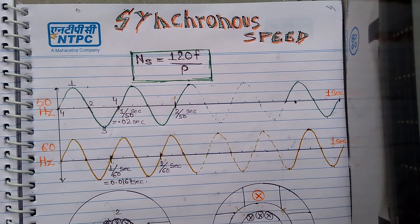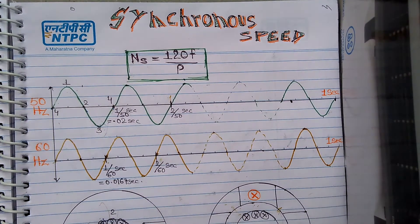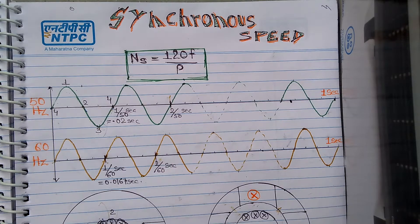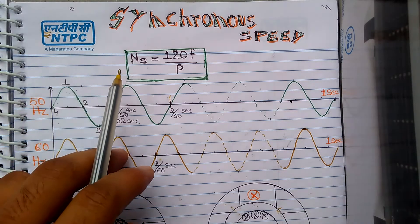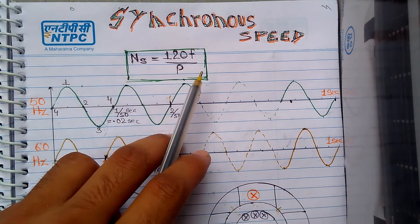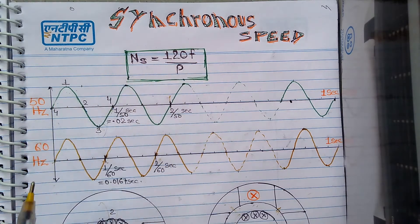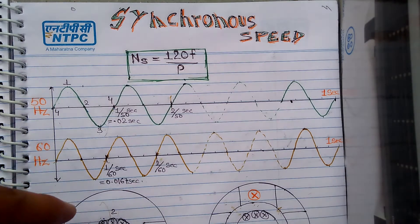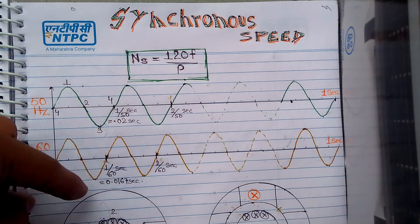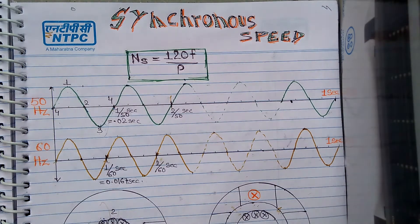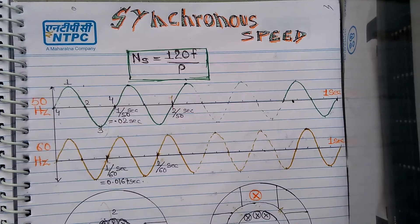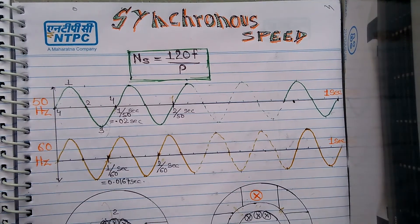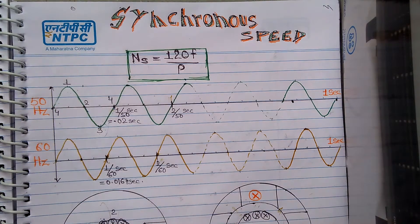Hello friends, welcome to Brain Amplifier. In this video we'll try to understand the concept of synchronous speed, as well as realize the formula which you'll be frequently encountering: Ns = 120f/P. Synchronous speed is the speed of rotation of the rotating magnetic field in a machine. I suggest you watch my video on rotating magnetic field to understand that concept.